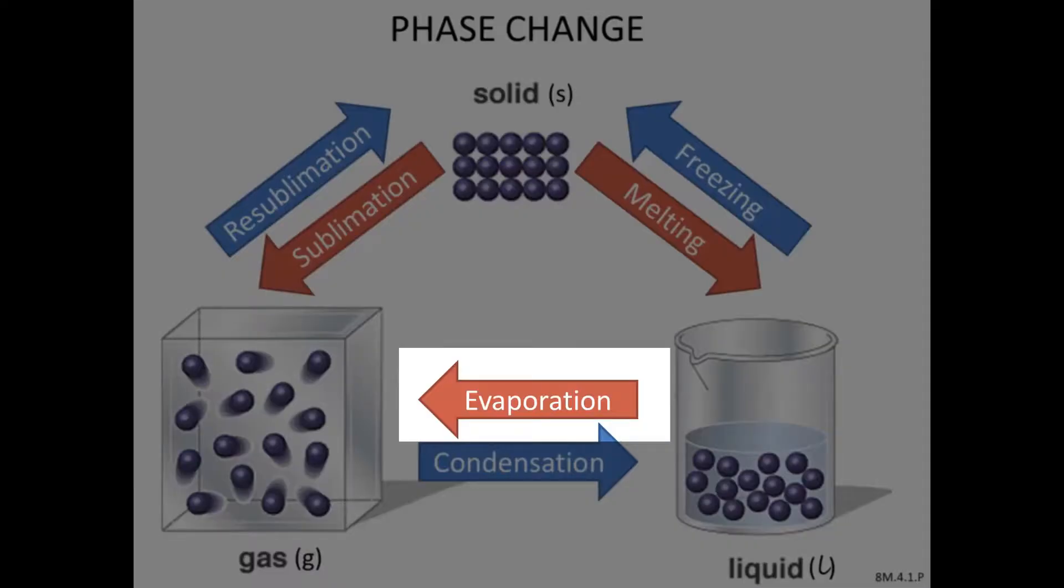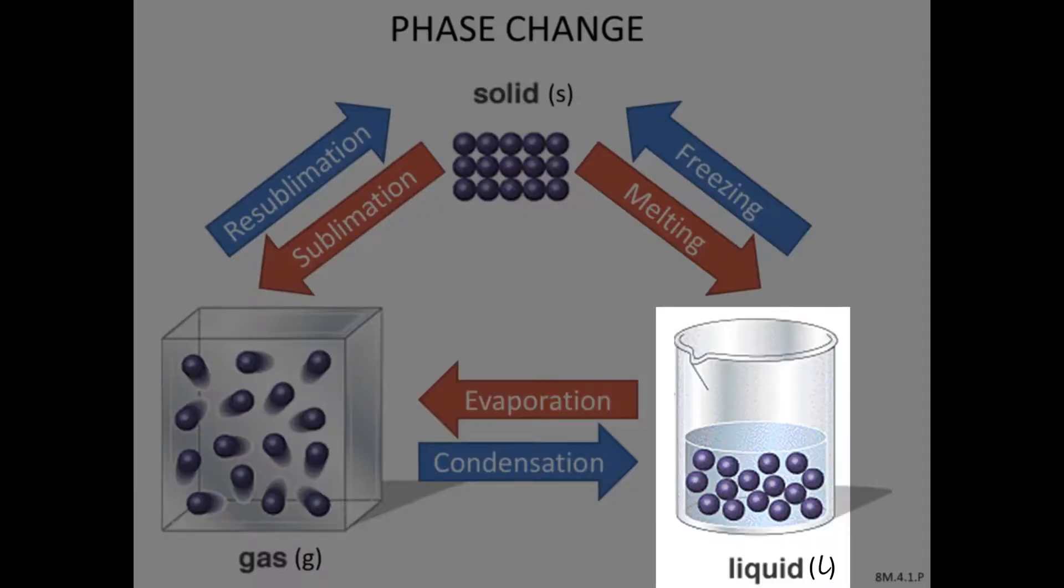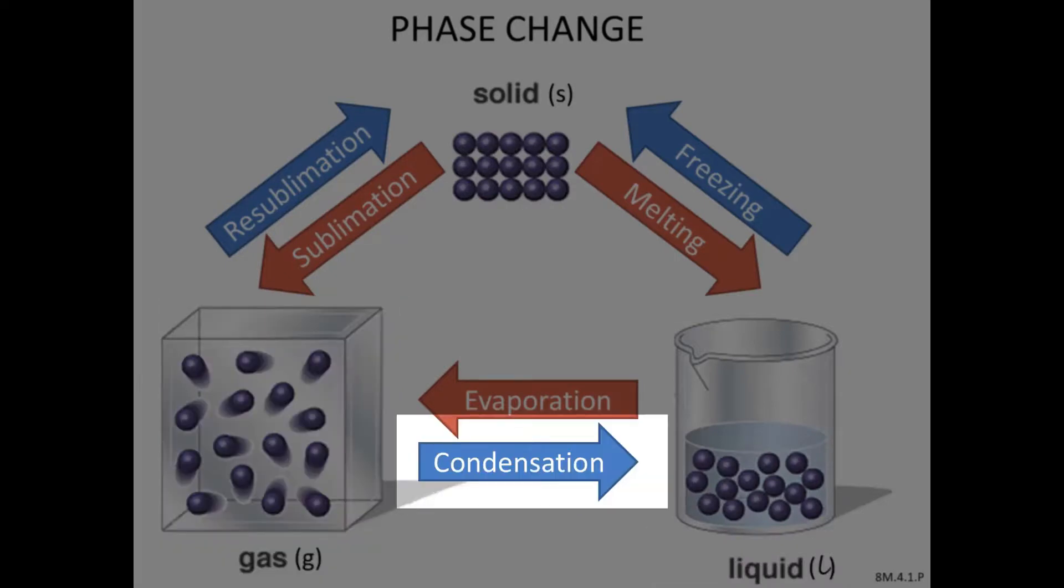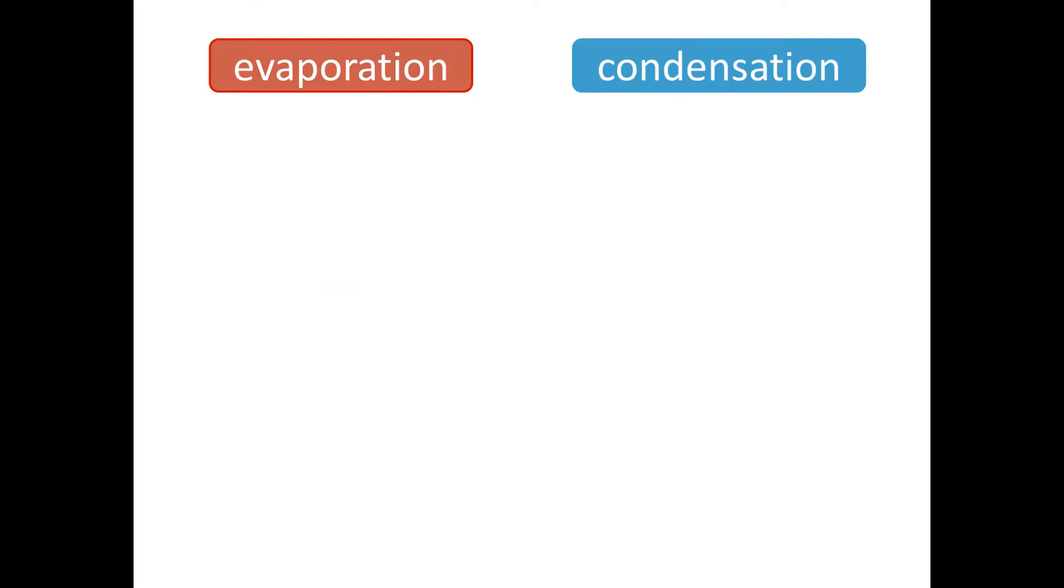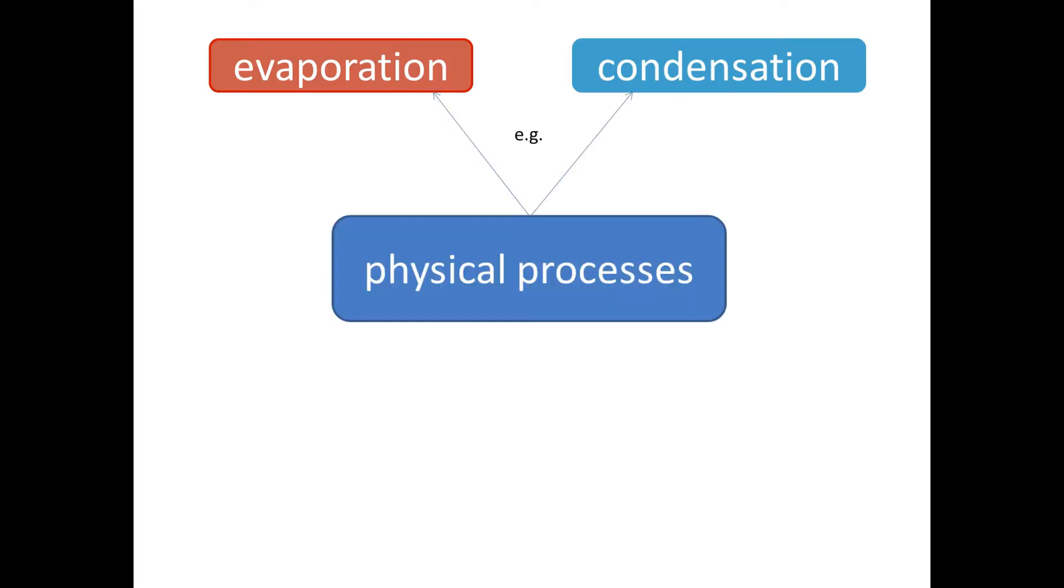Evaporation is the change in phase from liquid to gas. Condensation is the change in phase from gas to liquid. Evaporation and condensation are examples of physical processes because intermolecular forces are broken or formed in these processes.